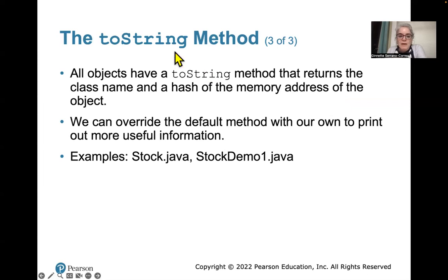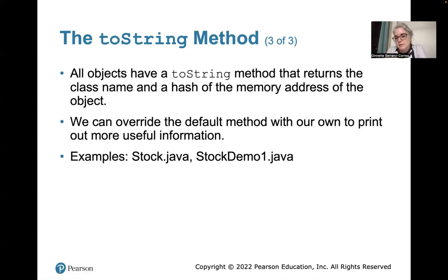All objects have a toString method, and you can create your own toString method. If you create your own toString method, it overrides the one that comes with the object.